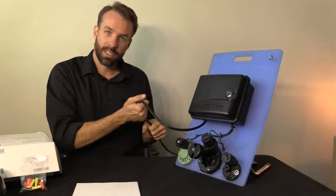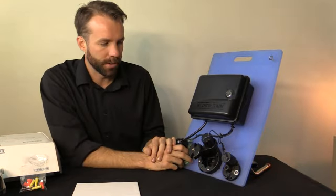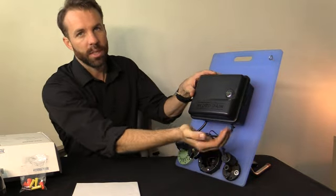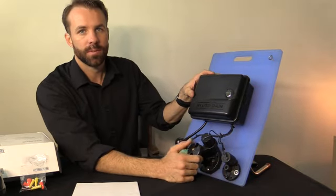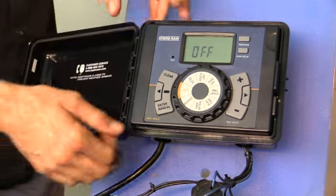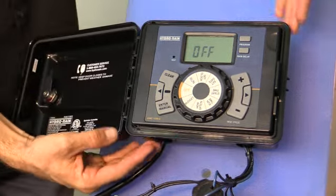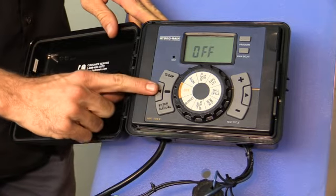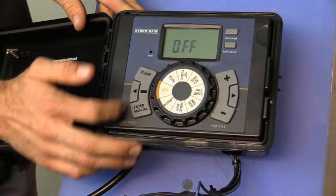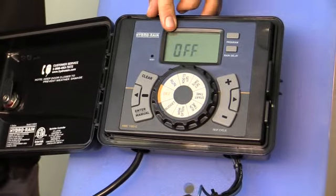Okay, so I made sure I plugged this in, so I know I have power here. We're going to go ahead and open this up and start programming. Okay, so now I opened up the hatch. You can see the display here. This mark right here indicates where on the dial I'm at. I'm on the off position, so we see our screen says off.